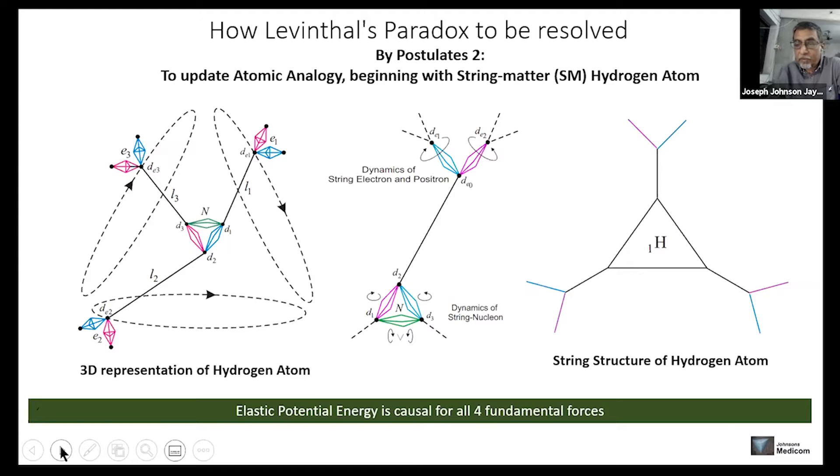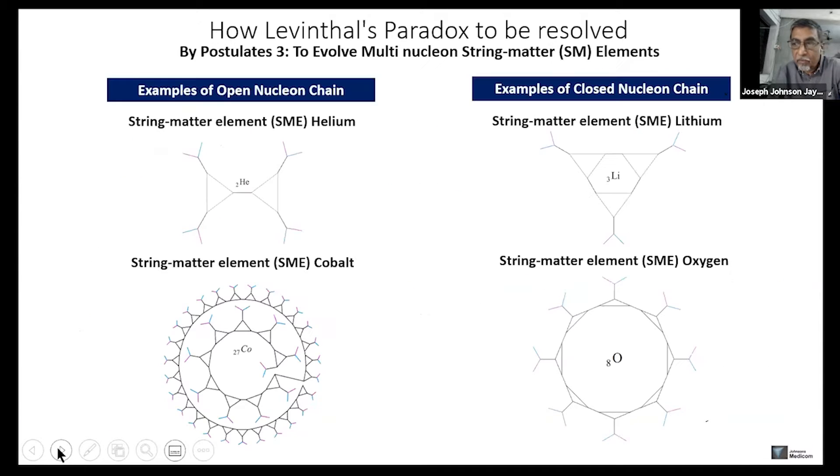With this, a distinct structure of hydrogen was formulated. When such nucleon joints as chain, the multi-nucleon elements are described. These multi-nucleon elements are classified as two types of elements: one is with an open nucleon chain and another is closed nucleon chain. The examples of these elements are described in the slide.